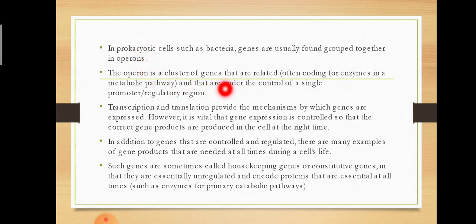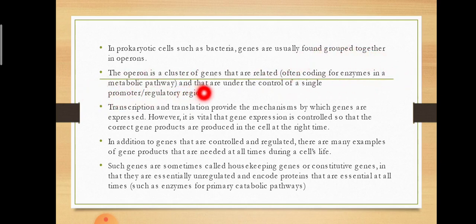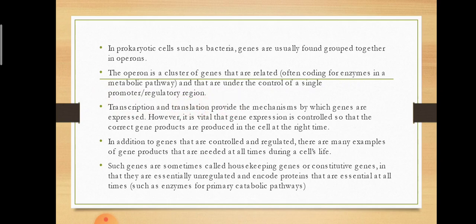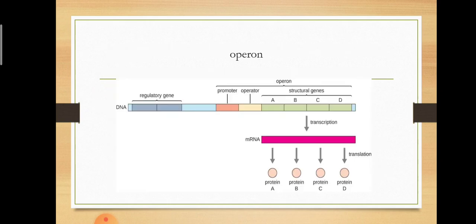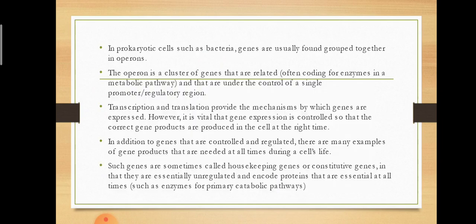Operon is a cluster of genes that are related, often coding for enzymes in a metabolic pathway, and that are under the control of a single promoter or regulatory region. These genes are under the control of the promoter.